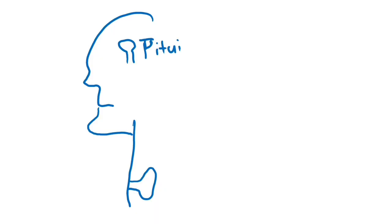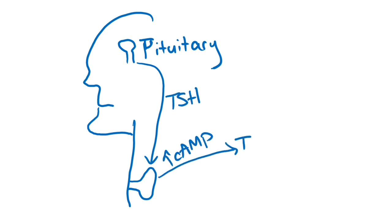TSH is released by the pituitary and stimulates production of T3 and T4 in the thyroid via increase in cyclic AMP.